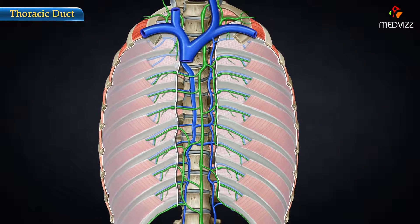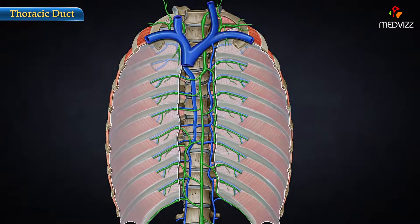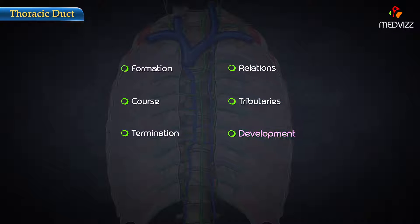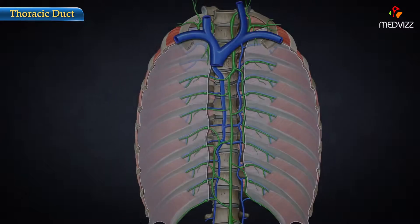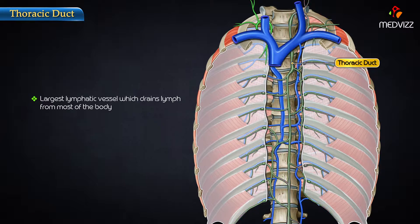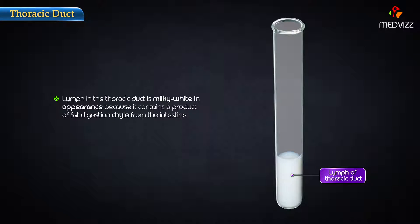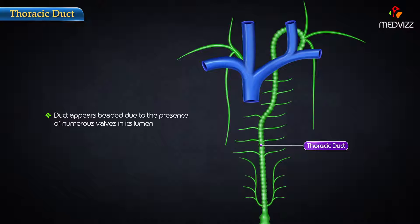Thoracic duct. In this topic we will be discussing about the formation, course, termination, relations, tributaries, and development of the thoracic duct. The thoracic duct is the largest lymphatic vessel which drains lymph from most of the body. The lymph in the thoracic duct is milky white in appearance. It contains a product of fat digestion known as chyle from the intestine. The duct appears beaded due to the presence of numerous valves in its lumen.